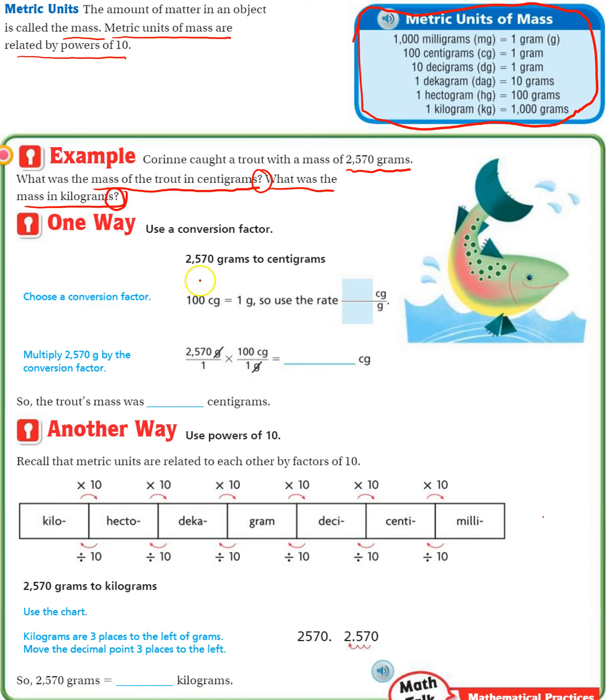So 2,570 grams, we want to change it to centigrams. 100 centigrams equals 1 gram. Since we want to change it to centigrams, we want our centigrams on top. So 100 centigrams is 1 gram.